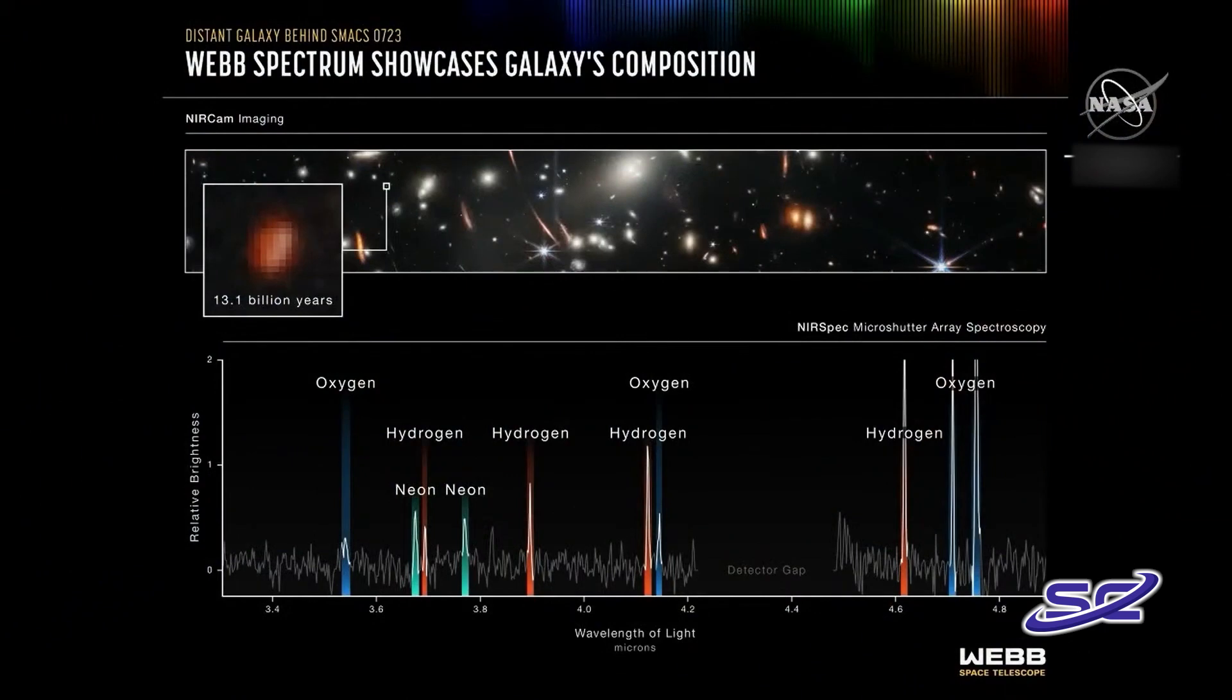We're seeing the elements of oxygen and hydrogen, as well as neon. This is how the oxygen in our bodies was made in stars, in galaxies, and we're seeing that process get started.